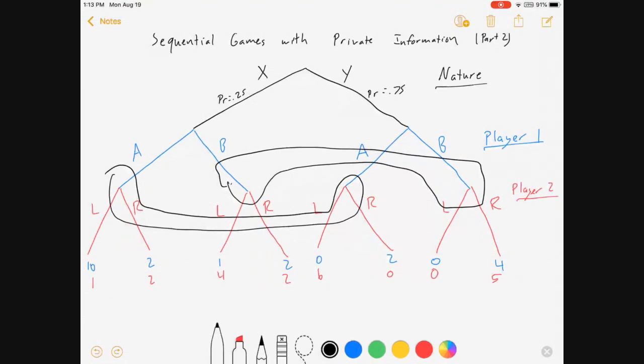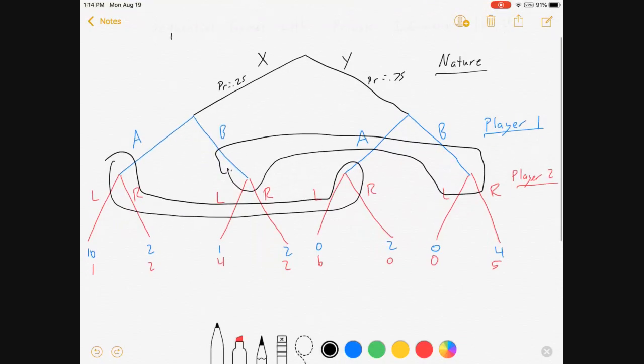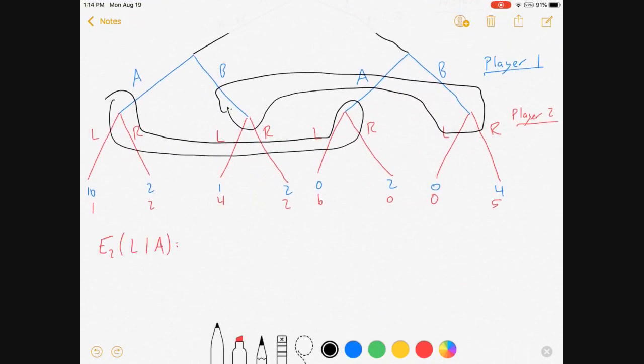All I know is the probabilities of each event happening. So when player one didn't know what was going on, what player two did, starting with backwards induction was easy because player two knew exactly what they were doing. Now player two is confused. And so we're going to have to deal with our expectations operator again. So let me introduce some notation.